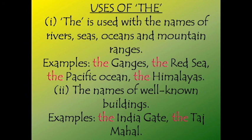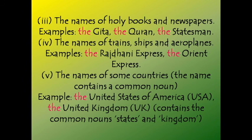The is also used with names of well-known buildings — for example, the India Gate, the Taj Mahal — because these are famous buildings. The names of holy books and newspapers also have the along with them — for example, the Gita, the Quran, the Statesman, the Hindu, the Deccan Chronicle, the Deccan Herald. The names of trains, ships and aeroplanes also take the — for example, the Rajdhani Express, the Orient Express.